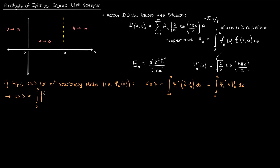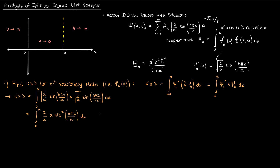Now I'll substitute my psi sub n and psi sub n conjugate. The conjugate is the same as the original function because there are no imaginary terms, so ultimately we get an integral with 2 over a times x times sine squared.